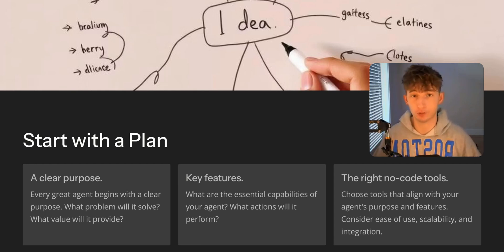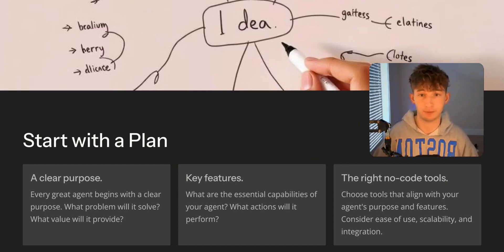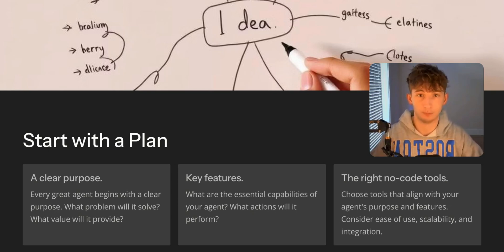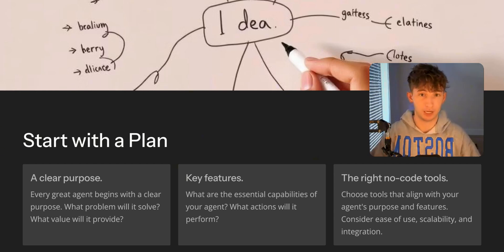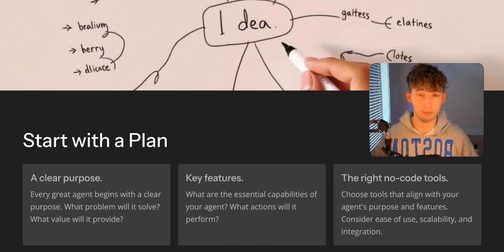Getting into step number one: planning your agent. Before you do anything, it's super important to have a clear plan. Think of this step as setting the foundation of your AI agent. Without a solid plan, it's easy to get lost or waste time going in the wrong direction. You want to find the purpose of this agent — ask yourself, what do I want this agent to achieve? Be as specific as possible. Is it to automate repetitive tasks like sending follow-up emails? Do you want it to analyze data and generate reports? Or maybe it's just answering questions based on a specific knowledge base. Take some time, get a pen and paper, and write down these goals. Having clarity here will guide every decision you make moving forward and will save you a lot of time.